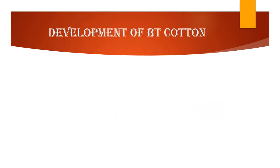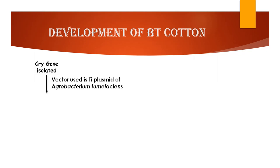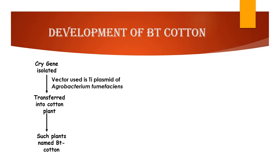Now, let's discuss the development of Bt cotton. The cry genes are isolated from Bacillus thuringiensis and transferred to the cotton plant. This gene is now expressed in plants to provide resistance against insects without the need for insecticides. Such plants are named Bt cotton.